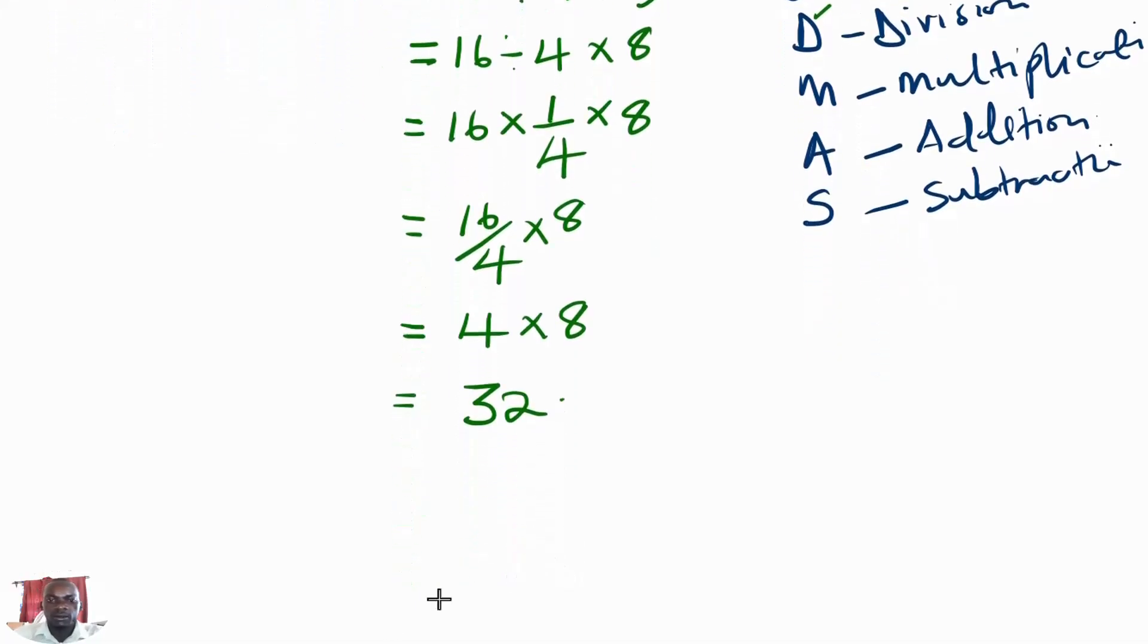Therefore, the correct response to the question, the expression 16 divided by 4 into the 16 take away 8, is coming to be the 32. So it implies that the 32 is our correct answer. Thanks for watching. See you again. Goodbye.